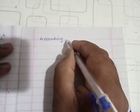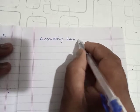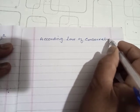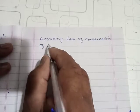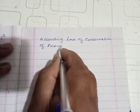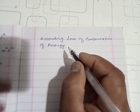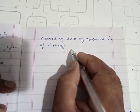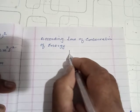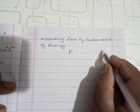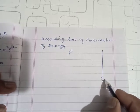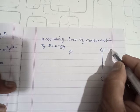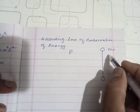According to the law of conservation of energy, the initial kinetic energy when the stone is thrown up will convert to potential energy, and at maximum height it will be maximum. At maximum height the velocity becomes zero.